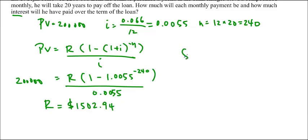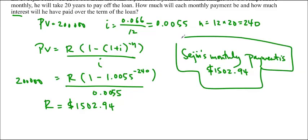Seijin's monthly payment is $1,502.94. It's quite a bit of money.